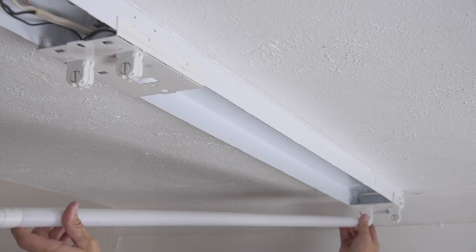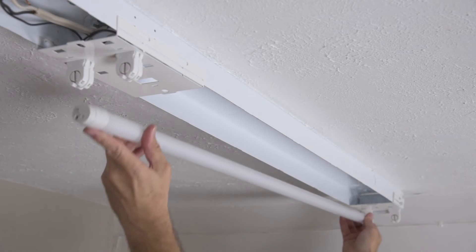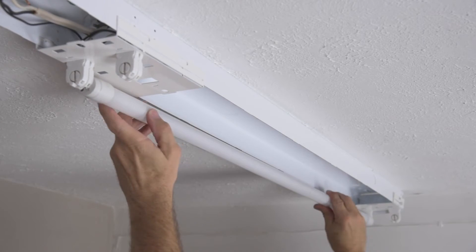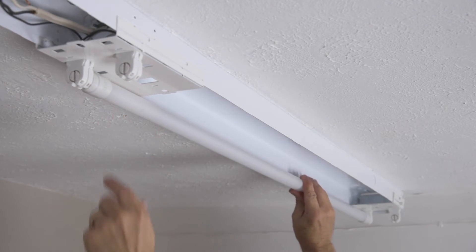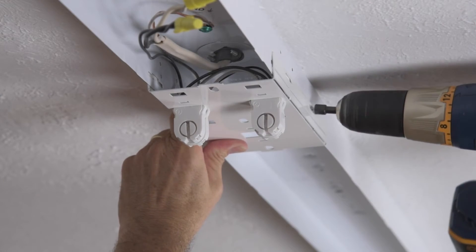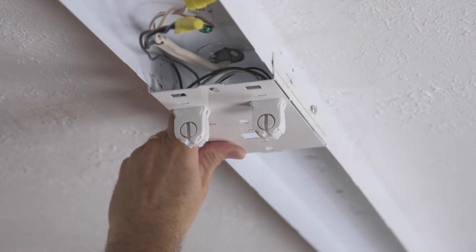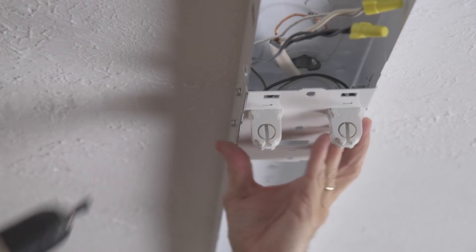To ensure the center sockets are at the proper distance from the ends, take one of the LED tubes and use it as a guide. Adjust the location of the center mount as needed. Use the self-tapping screws to secure it in place.